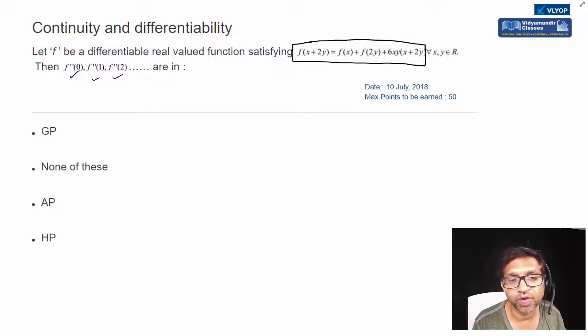Then we'll see whether they're in AP, GP, or HP. That's what we have to comment on - what are these values, are they in AP, GP, or HP.